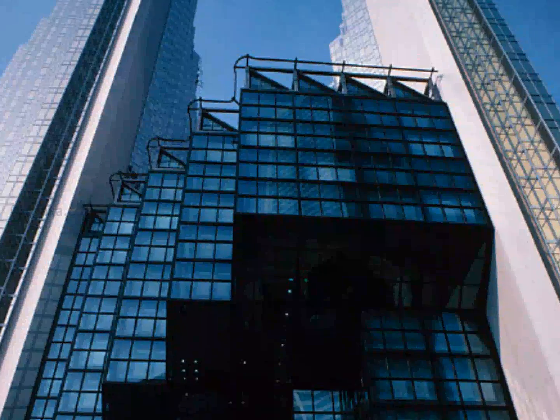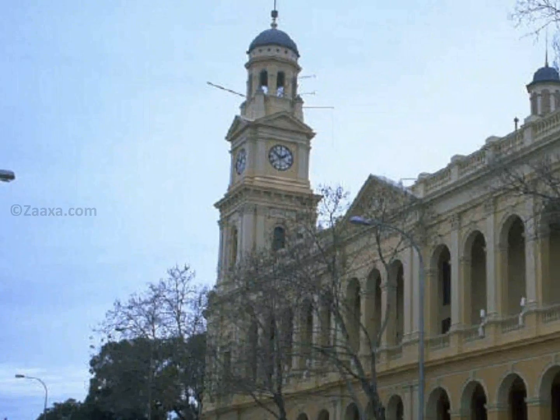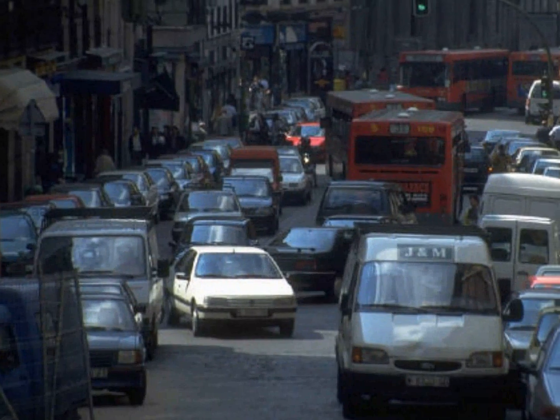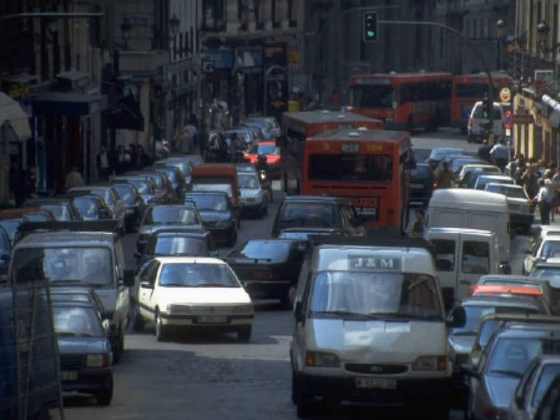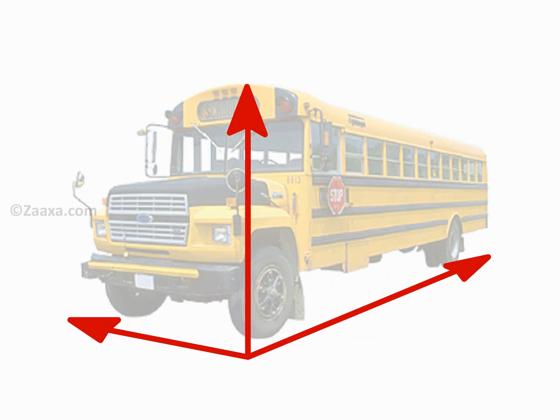We see solids, or three-dimensional objects, all around us. This means they have length, breadth, and depth, thus occupying space in three mutually perpendicular directions.